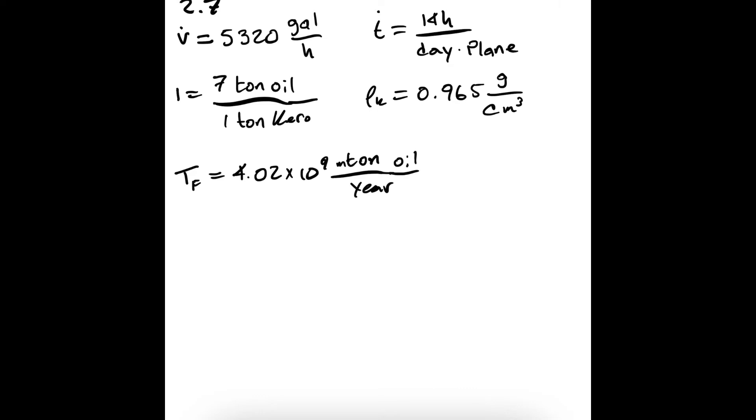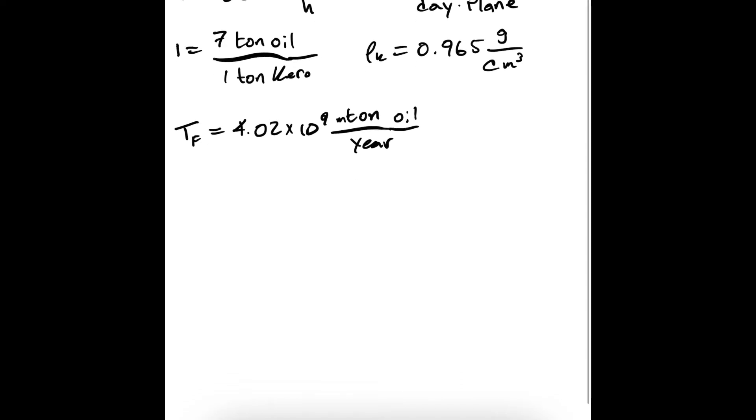Great, so now we just need to make sense of all this information they gave us. First, let's convert the volume consumption rate into a mass consumption rate, because the total metric tons of oil is a mass measurement. That's why they gave us the density. So let's go ahead and do that, and then while we're at it, after we convert it into a mass measurement, let's turn it into a mass rate per day per plane.